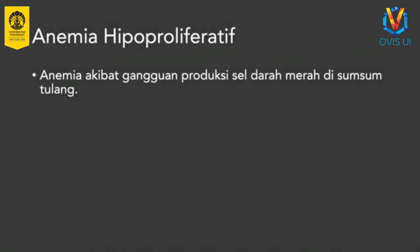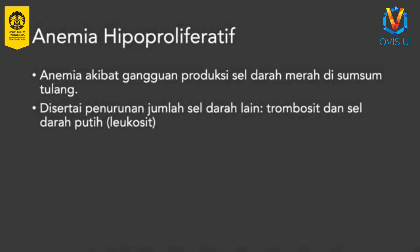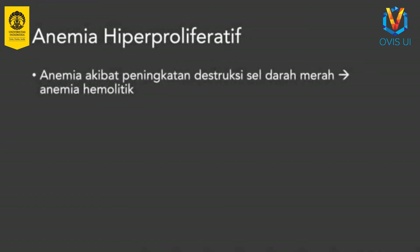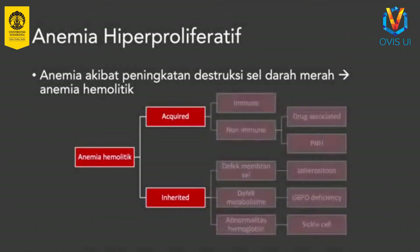Hitung retikulosit yang rendah di bawah 2% dapat terjadi pada defisiensi bahan baku eritropoiesis dan kegagalan sumsum tulang. Anemia hipoproliferatif disebabkan gangguan produksi sel darah merah di sumsum tulang, umumnya disertai penurunan jumlah sel darah lain seperti leukosit dan trombosit. Kondisi ini dapat terjadi pada leukemia dan anemia aplastik. Anemia hiperproliferatif dapat terjadi pada anemia hemolitik atau sebagai respons terhadap perdarahan akut.